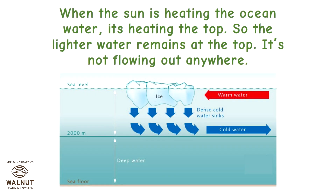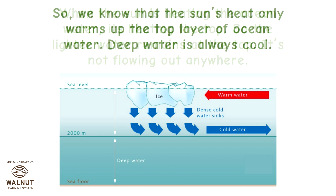When the sun is heating the ocean water, it's heating the top. So the lighter warm water remains at the top and is not flowing out anywhere. We know that the sun's heat only warms up the top layer of the ocean water, and deep water is always cool.